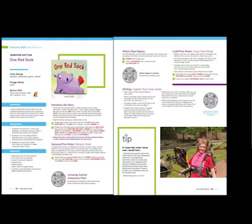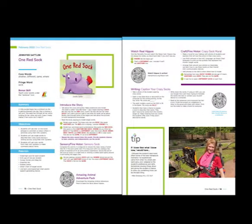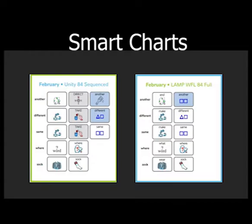In the planner you will find a lesson plan that includes supports for reading the story as well as extension activities to practice the vocabulary. Smart charts for the target words for Unity 84 Sequenced and LAMP Words for Life Full are included for communication partners.